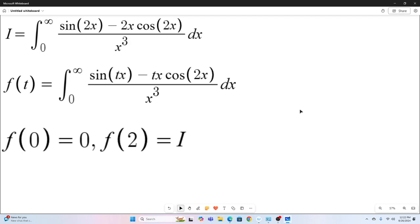Oh, no, I'm sorry. First, we calculate some values for our F of T. F of zero is going to equal zero. That's pretty easy to see. And F of two is, of course, going to give us back our original integral.